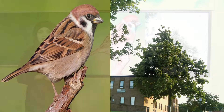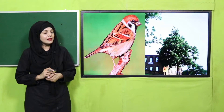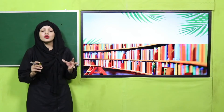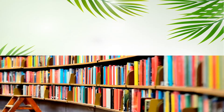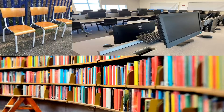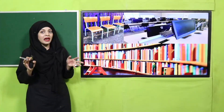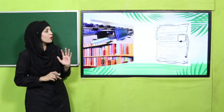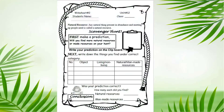Then I saw a sparrow on the tree — it is a living thing. I also saw a tree in the garden, also a living thing. Then I went to the library and saw a lot of chairs — those are man-made non-living things. I then moved to the computer lab and saw computers, chairs, and tables — all man-made non-living things. My tour ends here.